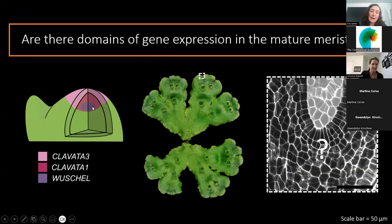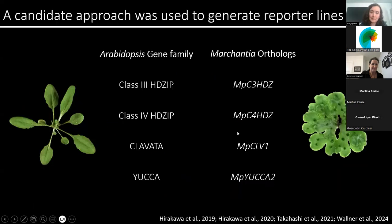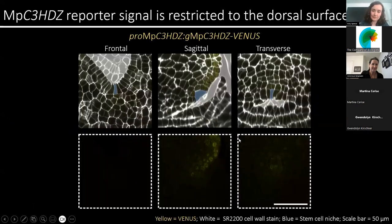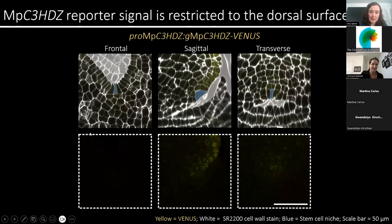As we saw in the previous talk, in flowering plants there are discrete localizations of gene expression within the meristem to control meristem anatomy. I wanted to test if there are similar discrete domains of gene expression in the mature meristem of Marchantia, using a candidate approach with genes known to regulate meristems in Arabidopsis and in Marchantia, where for each Arabidopsis gene family there was one Marchantia ortholog. Class 3 HDZips are known to specify dorsal identity in Marchantia. In the frontal plane, I detected no class 3 HDZip expression. However, in the sagittal plane, expression was restricted to the dorsal surface above the stem cell niche, consistent with its role in specifying dorsal identity.